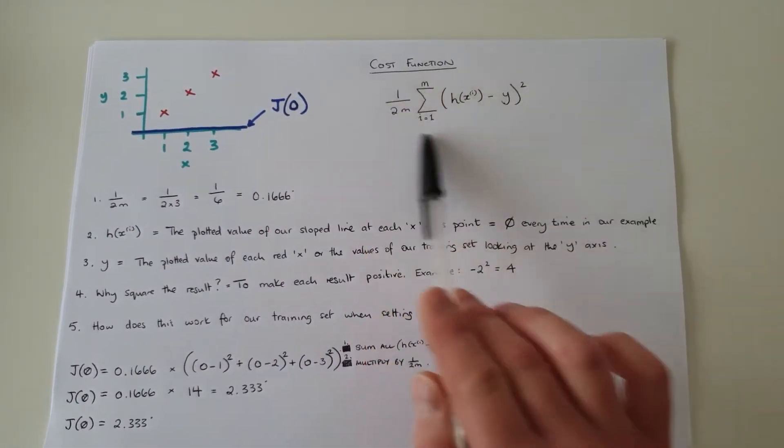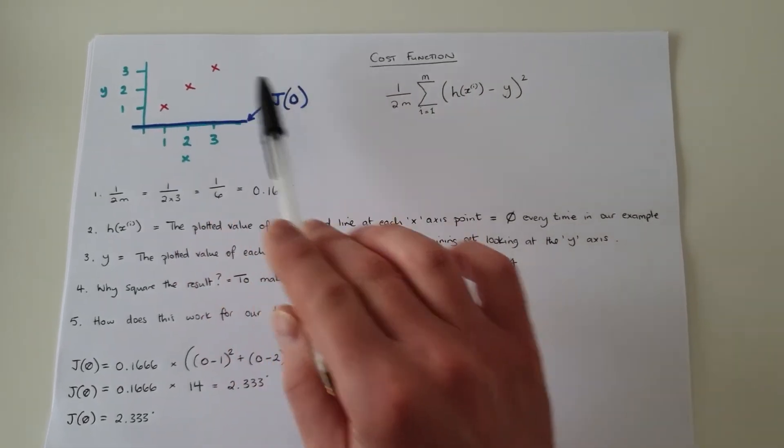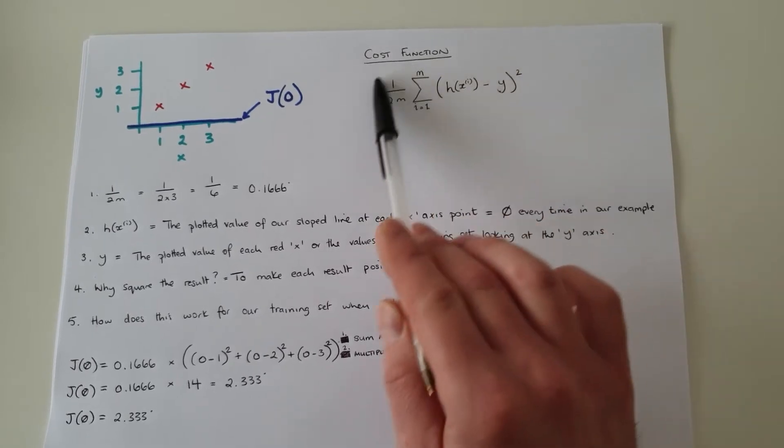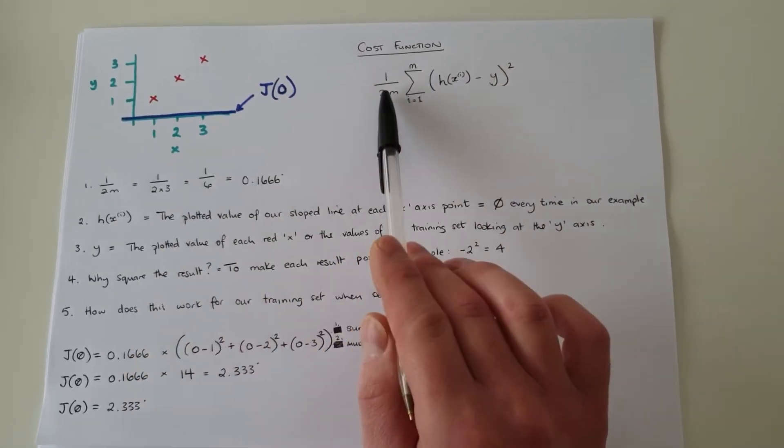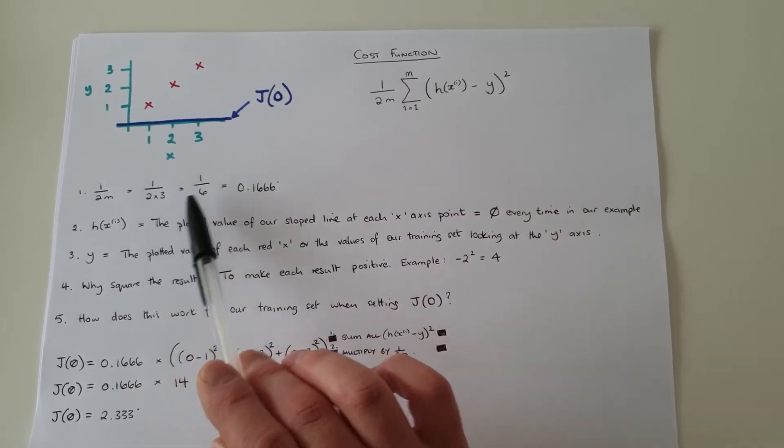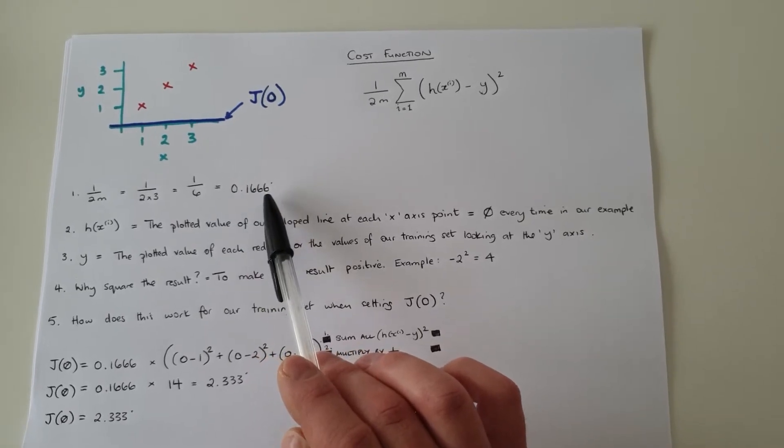So when we loop through this equation three times, because m equals three, we've got three results, we will just transfer the values into this equation and sum them up. So the first thing we'll do, we'll deal with the one over two m, which calculates one over six, which equals zero point one six six six reoccurring.